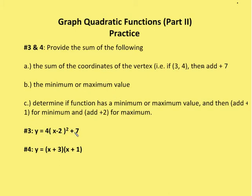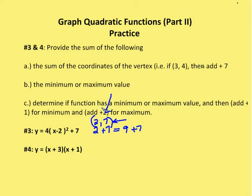For the first quadratic function in vertex form, the sum of the coordinates: I have two plus seven, so the sum is nine. My vertex is at (2, 7). The minimum or maximum value is simply the y-value of the vertex, so that's plus seven. The graph opens up, so the function has a minimum value — I add plus one. My total is going to be 17.